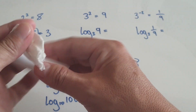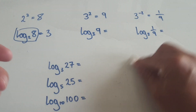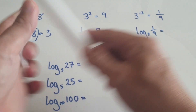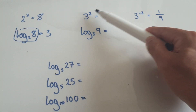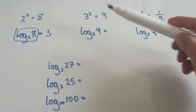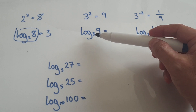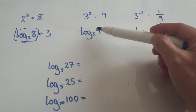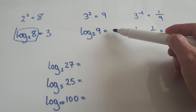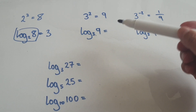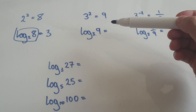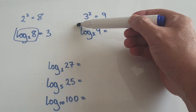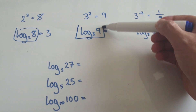Let's look at this one here. We know 3 squared is 9, but a question will be given to you as: log base 3 of 9 is what? So you've got to translate this whole block here.